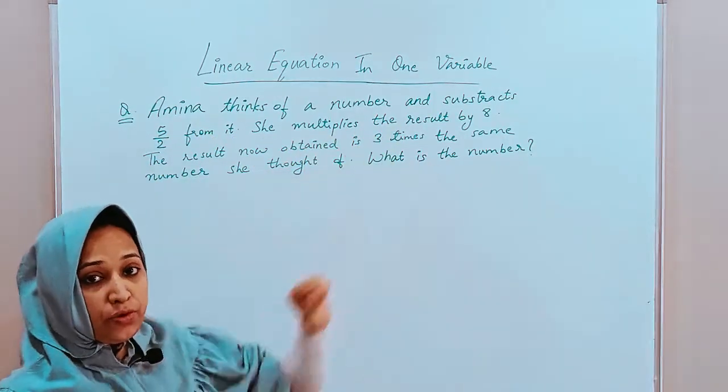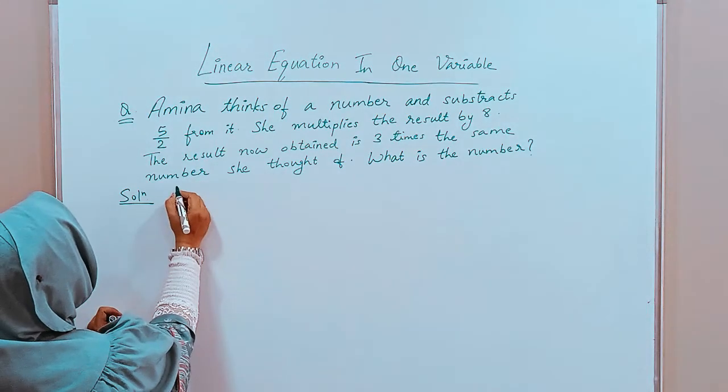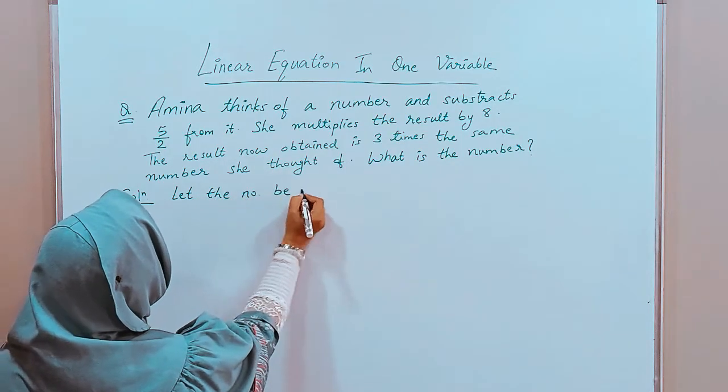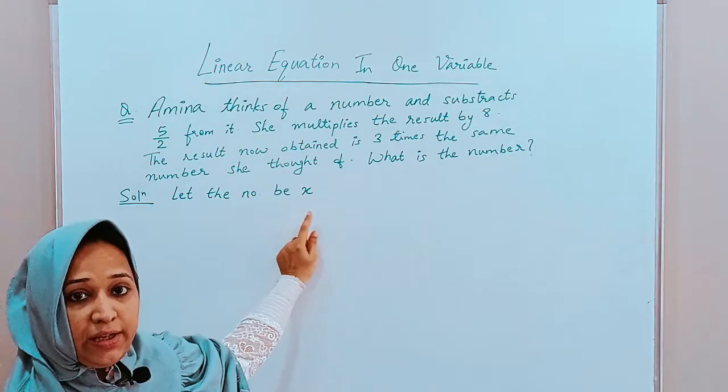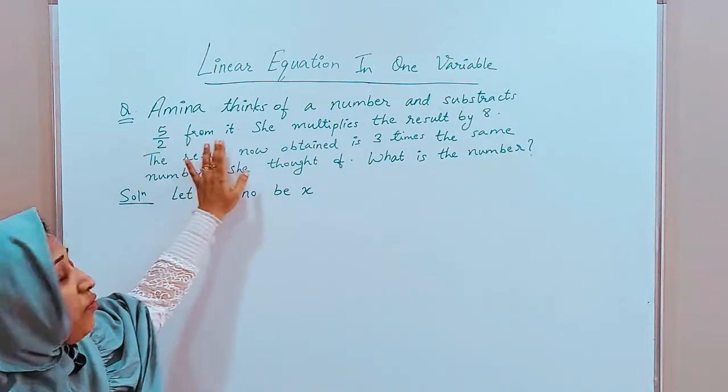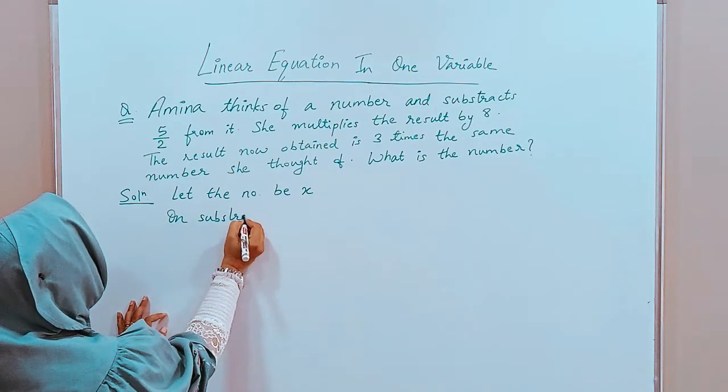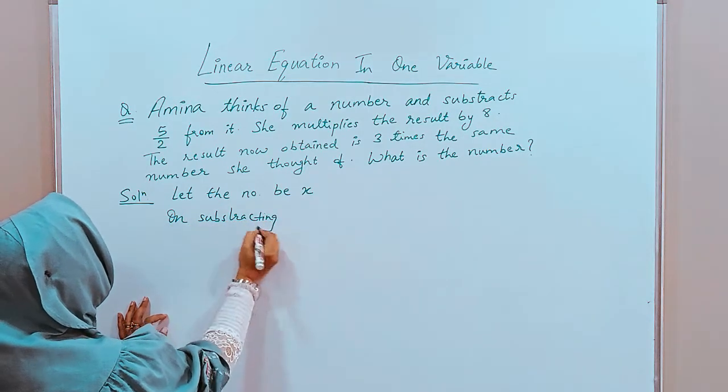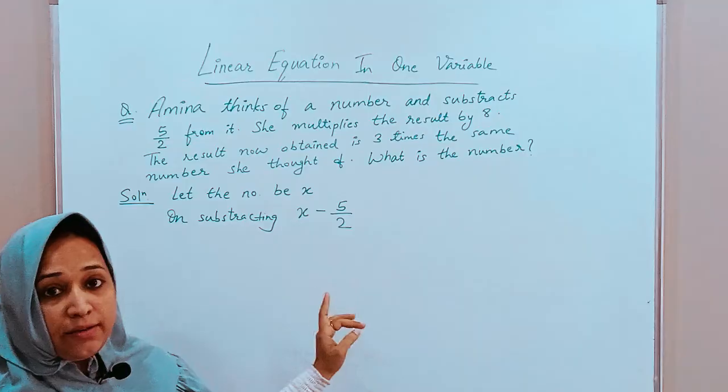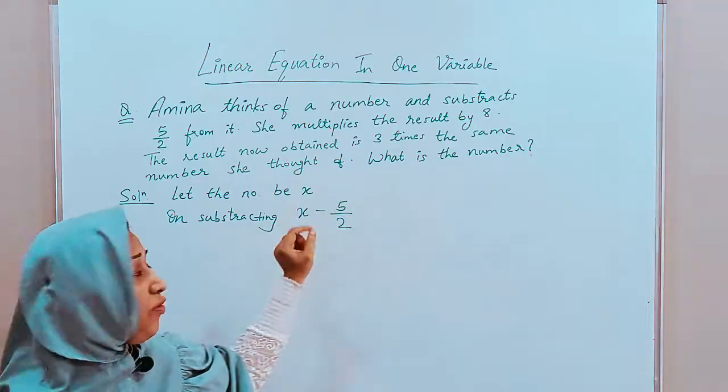Amina thinks of a number. So, the first thing we will do is, we will say let the number be x. Which number? The number which Amina thought of. Let it be x. Then, it says and she subtracts 5 by 2 from it. It means on subtracting, the number becomes x minus 5 by 2. Now, the most important thing here is, the question says she subtracts 5 by 2 from it. Means from x.